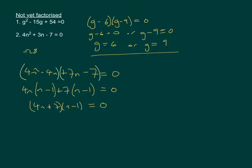That's all equal to 0, remember. And then, again, just like before, either 4n plus 7 equals 0 or n minus 1 equals 0. So either 4n equals minus 7, which means that n is minus 7 over 4, or n equals 1.